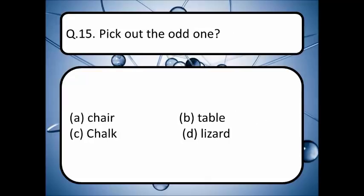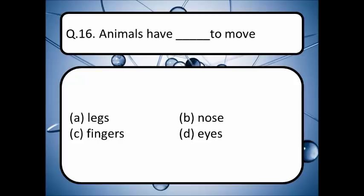Pick out the odd one — the odd one is D, lizard. Next question: animals have dash to move. Options are legs, nose, fingers, eyes. The correct answer is option A — legs.